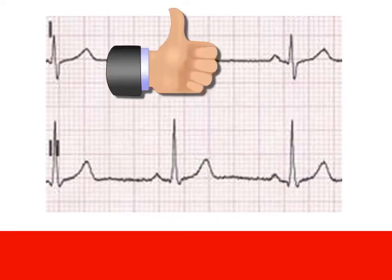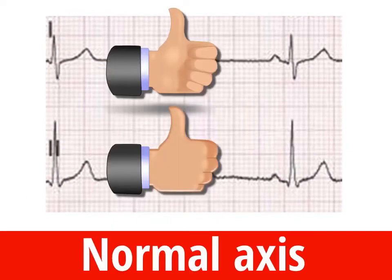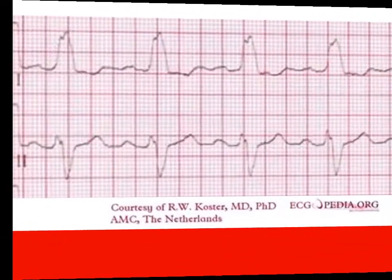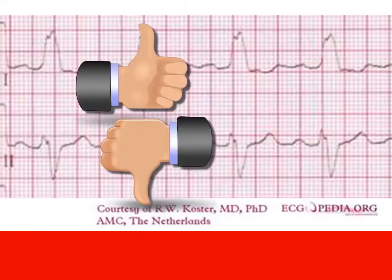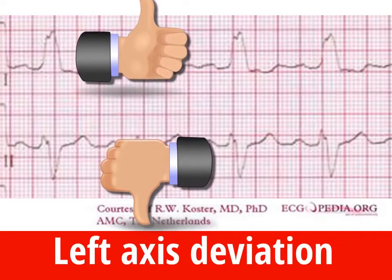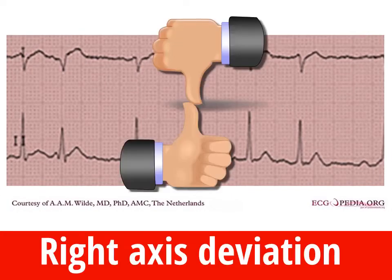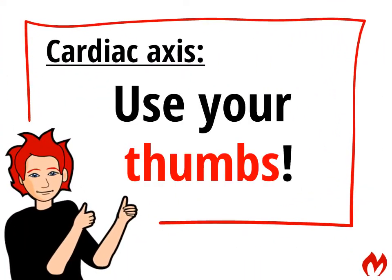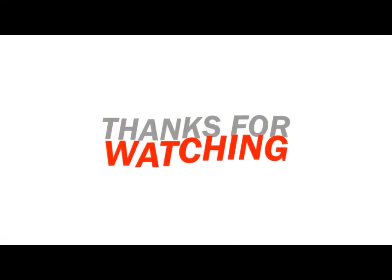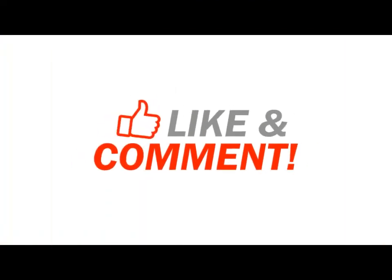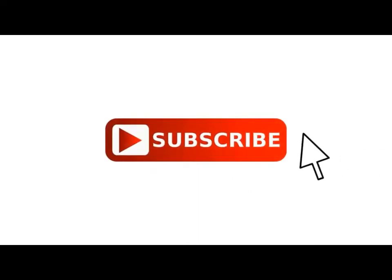Let's try that again. In this ECG, there's 2 thumbs up so the axis is normal. In this ECG, thumbs have left each other so it's left axis deviation. And finally, in this ECG, thumbs are headed right for each other so it's right axis deviation.